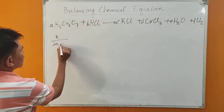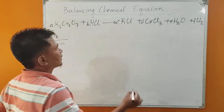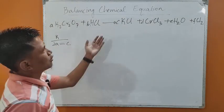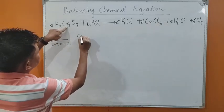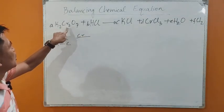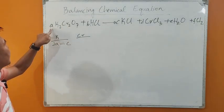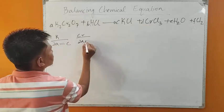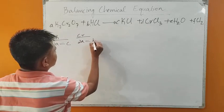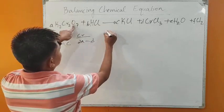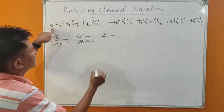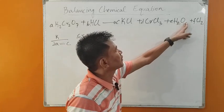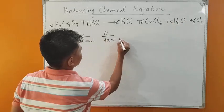No other potassium on the right-hand side, so let's move to the next element: chromium. We have two in the subscript of chromium, so two into A is 2A. No chromium on the left-hand side. On the right-hand side, we have chromium, so one into D is D. After that, we have oxygen. We have seven in the subscript of oxygen, so seven into A is 7A. No oxygen on the left-hand side, so equal sign, and we see oxygen here on the right — no subscript means one — so one into E is E.